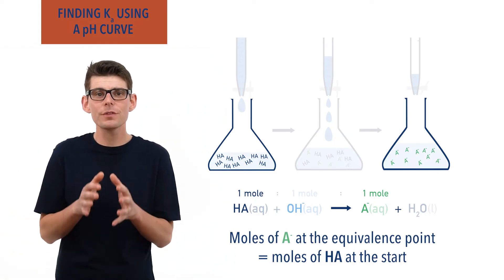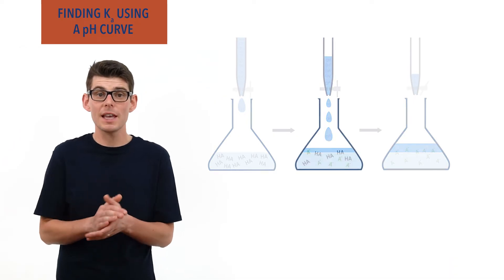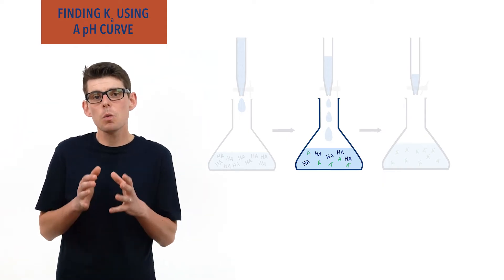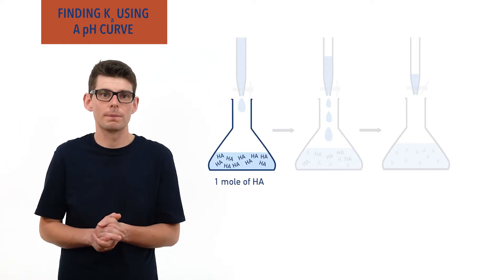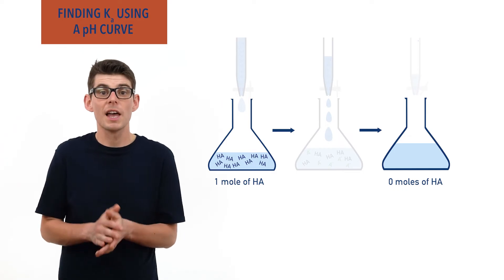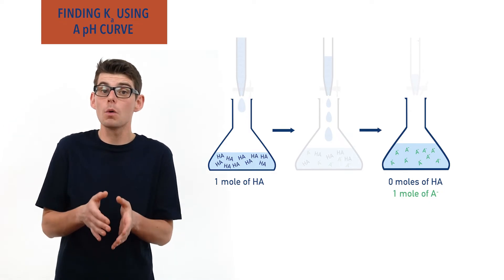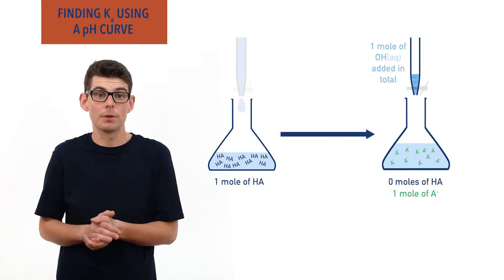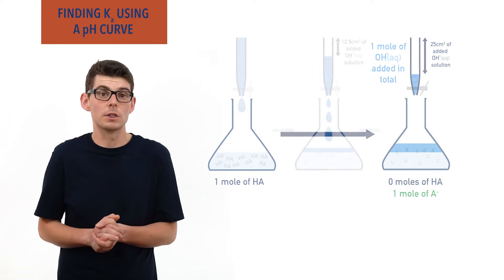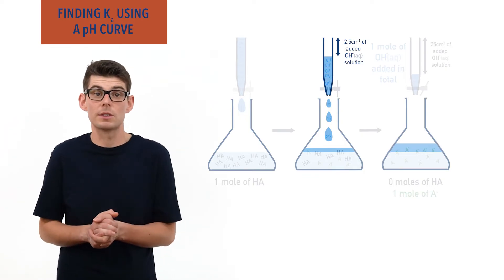Here's the interesting part. When half the final moles of base needed to reach the equivalence point had been added, the moles of A-minus and HA were the same, in the same volume of solution, meaning the concentrations of both were also the same. For example, if there is one mole of HA molecules at the start of a titration, when the concentration of HA becomes zero at the equivalence point, one mole of HA molecules have reacted and one mole of A-minus ions have been formed. For this to happen, one mole of hydroxide ions would be added from the solution in the burette — let's say from 25 cm³.